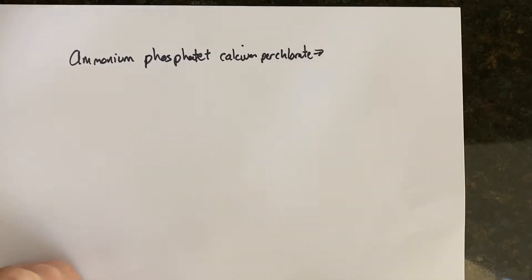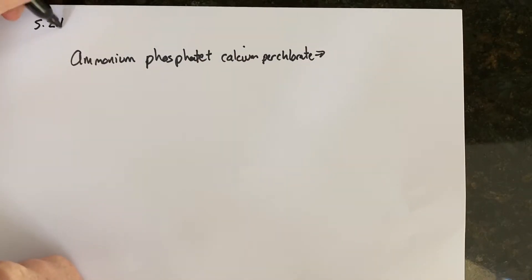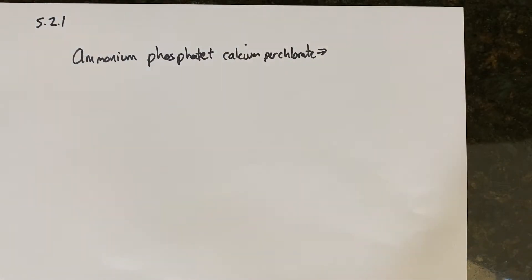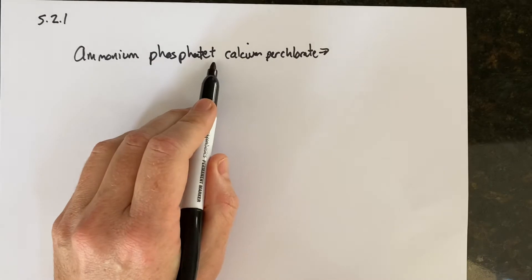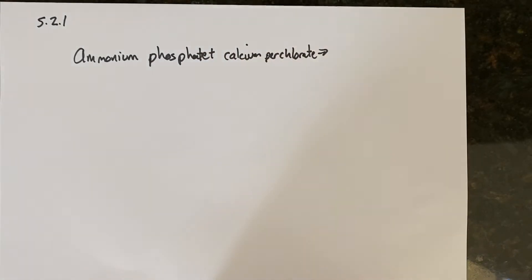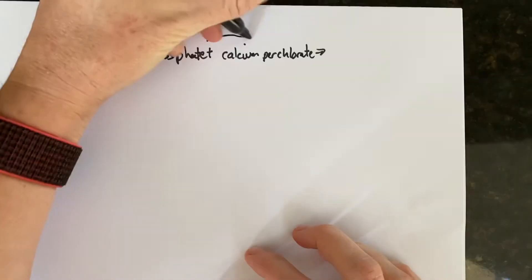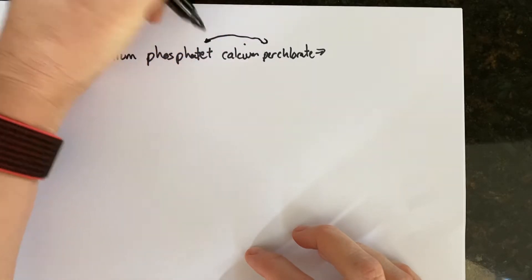All right, so I had a question in chapter 5.2.1, and it starts off like this. You have ammonium phosphate plus calcium perchlorate, and it's actually written out, but I like you guys to guess the products anyways.